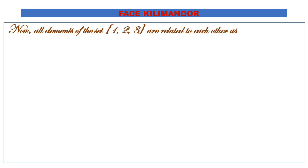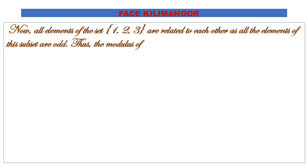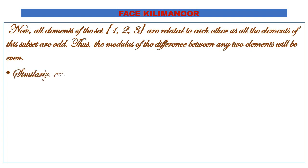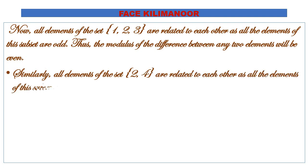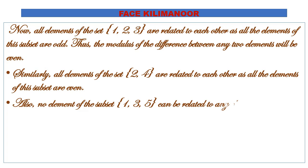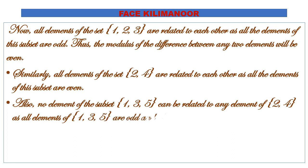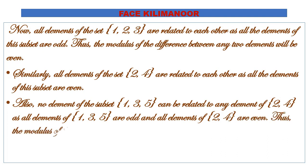All elements of {1,3,5} are related to each other because all elements of this subset are odd. The difference between any two odd numbers is even. Similarly, all elements of {2,4} are related to each other because all elements are even. No element of {1,3,5} can be related to any element of {2,4}.